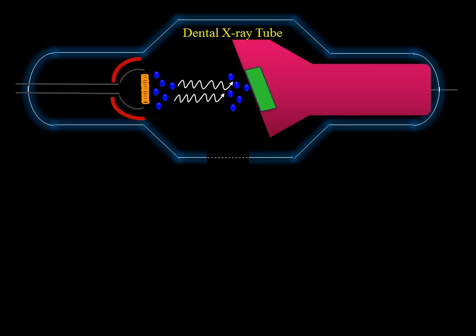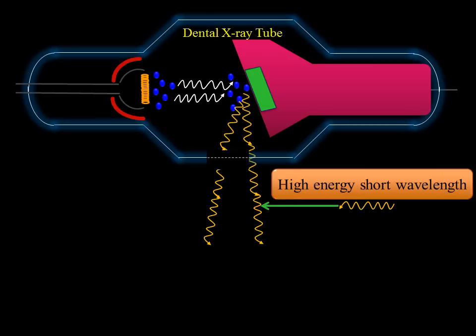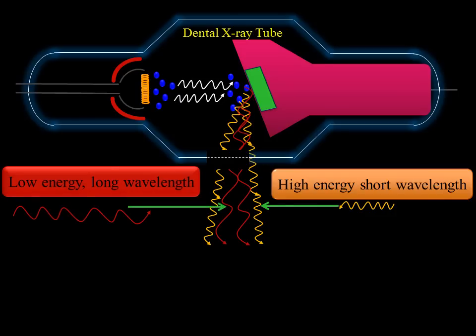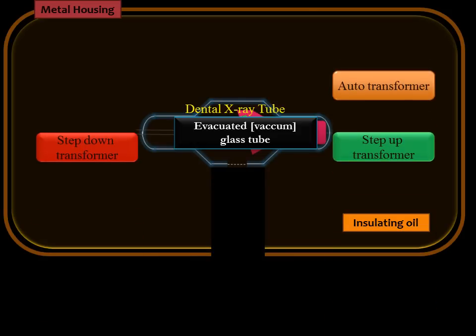When the x-rays are produced, high energy short wavelength x-rays are produced and low energy long wavelength x-rays are produced. The x-ray tube and all the transformers are immersed in an insulating oil which insulates the heat produced in the x-ray tube from transmitting outside the x-ray tube head.